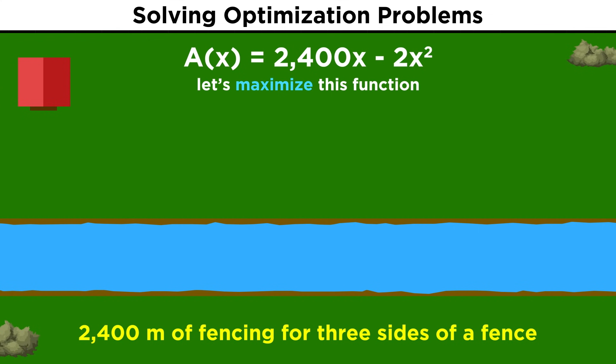Now we said that we want to get the biggest area possible. That means we want the maximum possible value of this function. Well, we learned that to find a maximum or minimum, we must take the first derivative and see where it equals zero, so let's do that. The first derivative will be twenty-four hundred minus 4x. We can just set this equal to zero, move things around a bit to solve for x, and we get x equals six hundred.